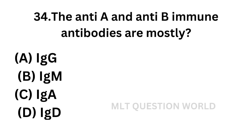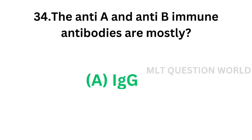Question No. 34. The anti-A and anti-B immune antibodies are mostly: Option A: IgG. Option B: IgM. Option C: IgA. Option D: IgD. Anti-A and anti-B immune antibodies belong to which category? The correct answer is Option A — IgG.